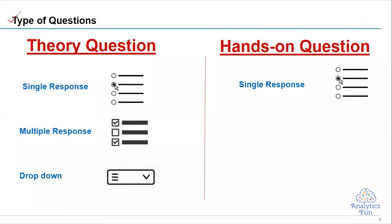Alteryx tests two types of questions: theory questions and hands-on questions. In the theory category there are three types — single response (radio buttons, one correct option, the easiest type), multiple response (checkboxes, multiple statements can be true, relatively tougher), and drop-down questions (choose a tool or statement from a drop-down). In the hands-on category, the practical questions follow a set format: you download data, solve the question, find the answer, and mark the single correct response using radio buttons.